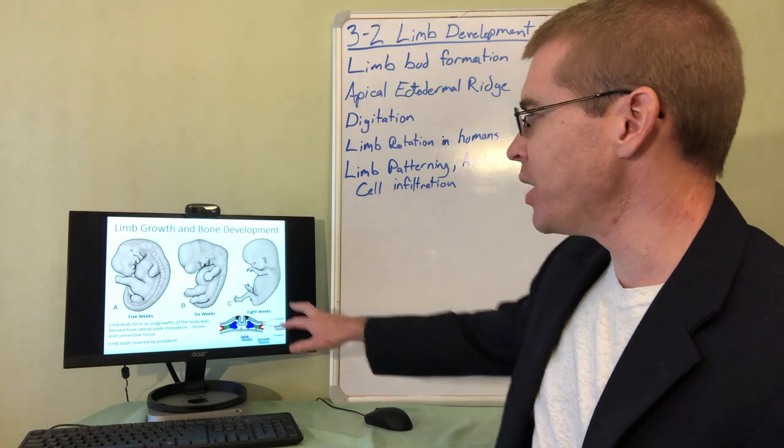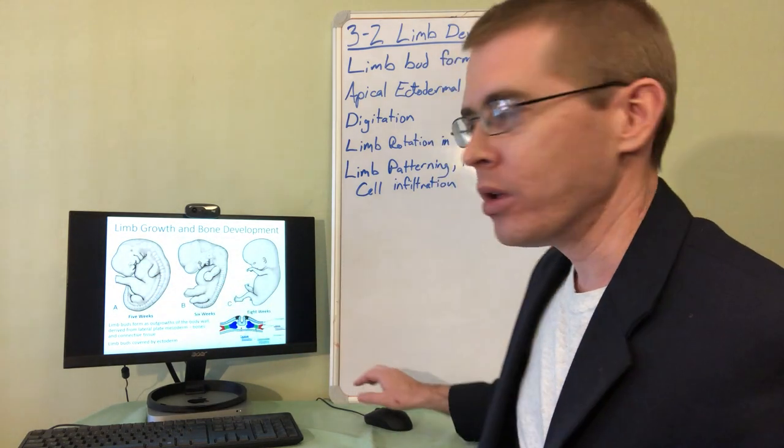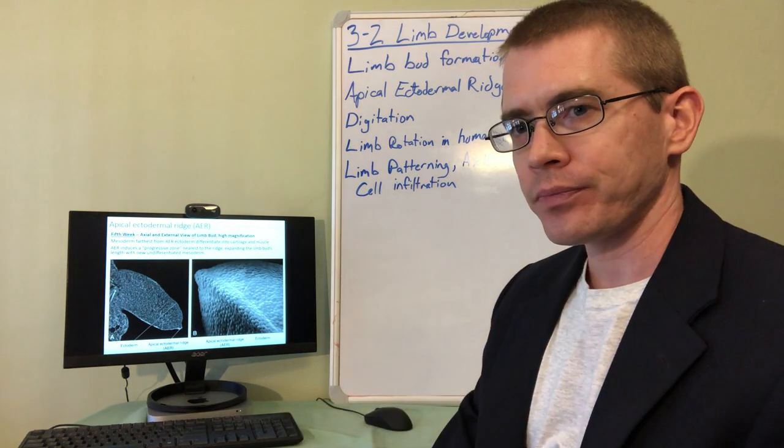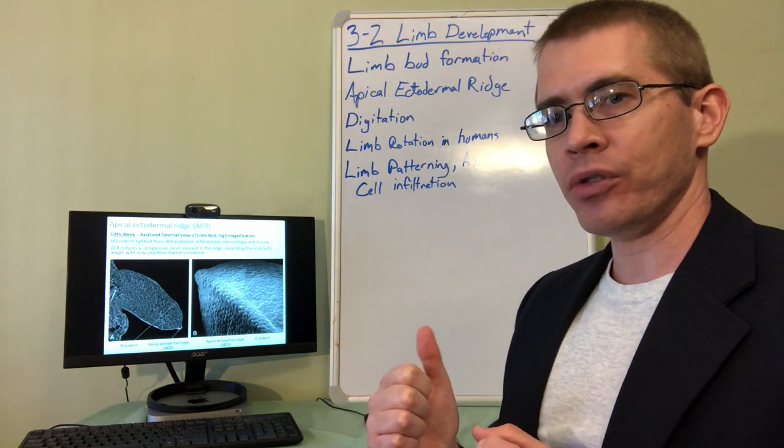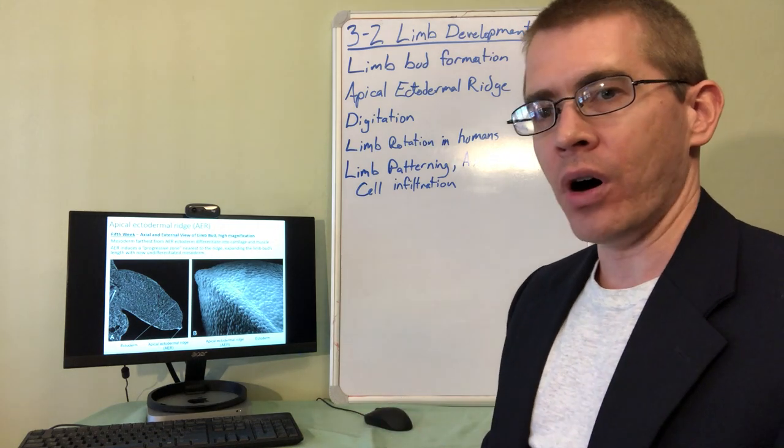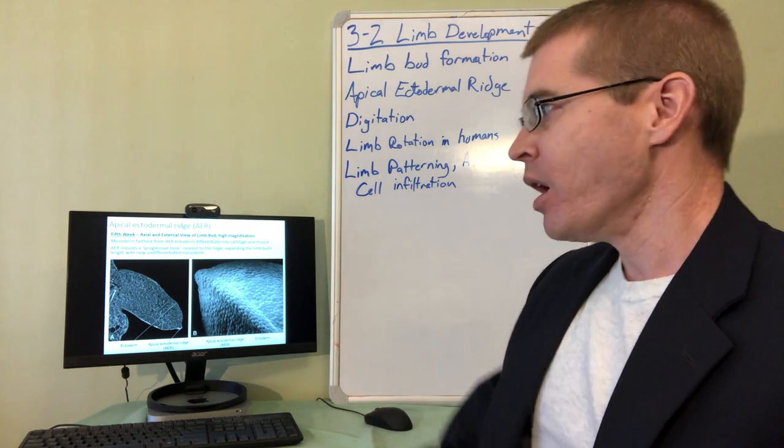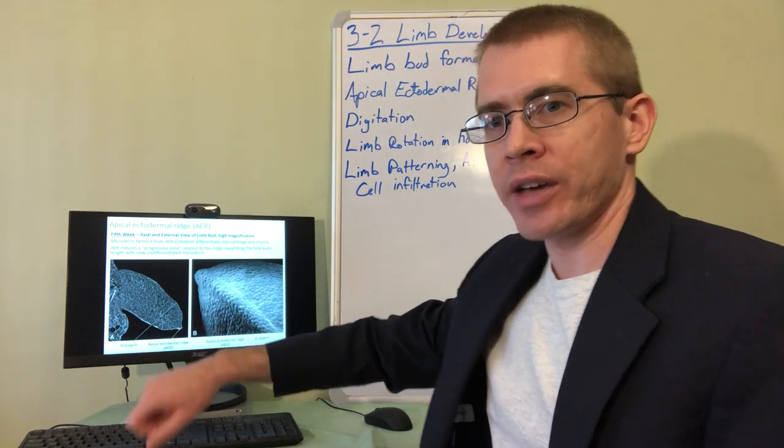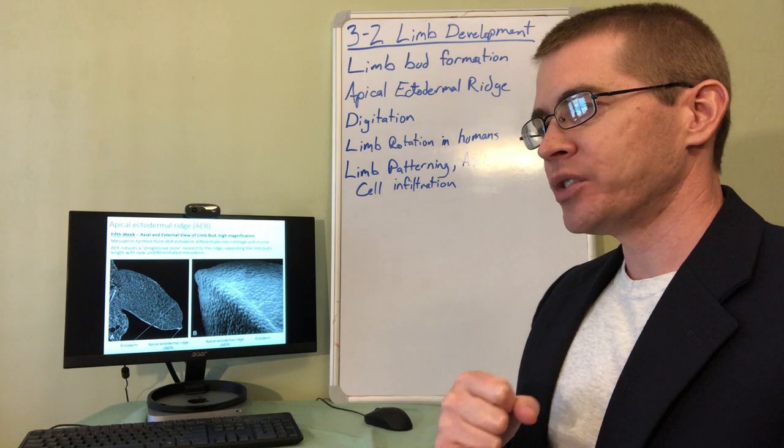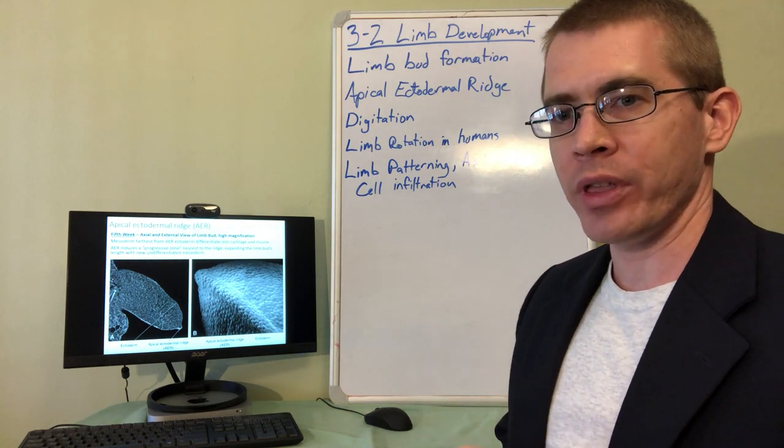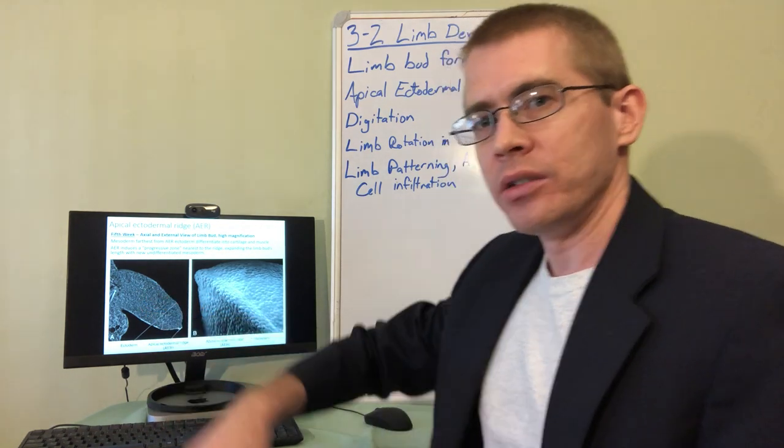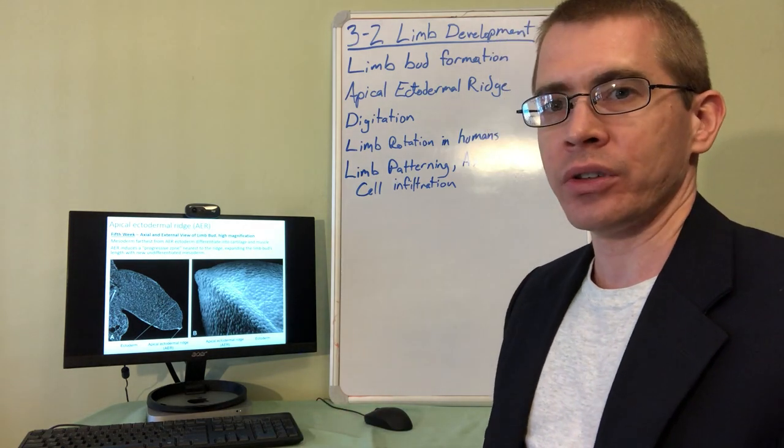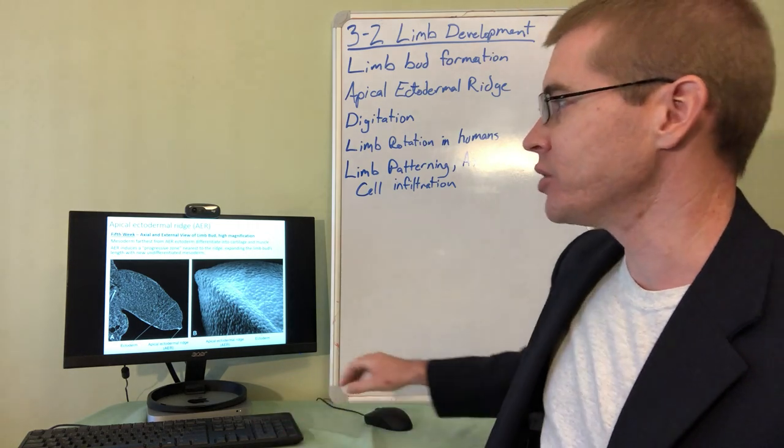So these limb buds grow out from the body wall and are formed mainly from mesoderm. The attractive signal for the outgrowth of all of the cells within the limb buds is this apical ectodermal ridge. This ridge of ectoderm signals for the mesenchyme within the limb bud to begin condensing to form the bone models in that chondrogenesis process we've already talked about.